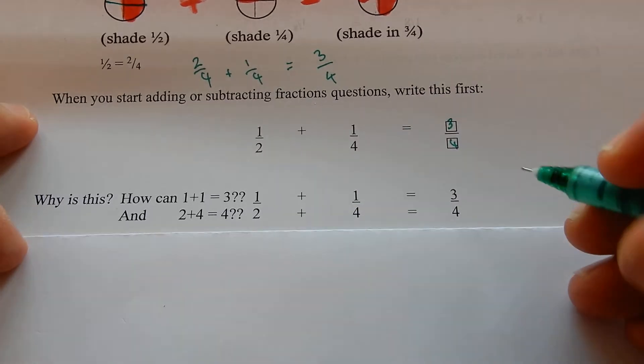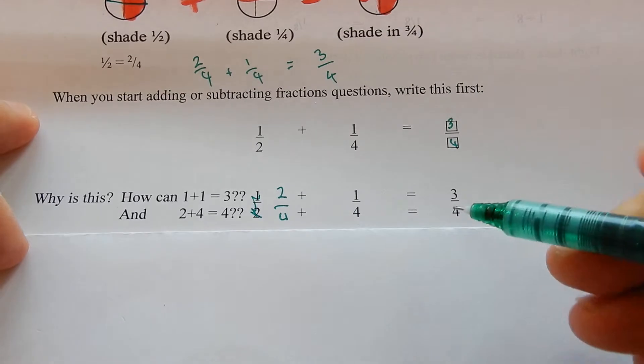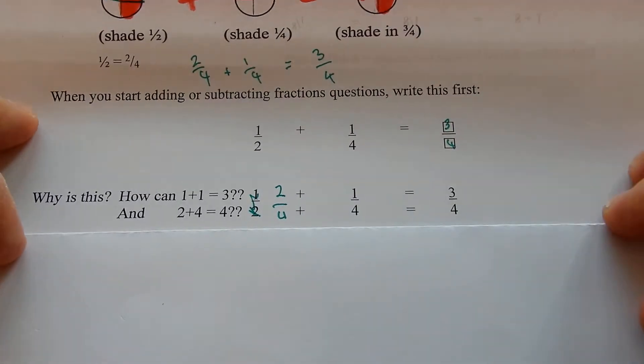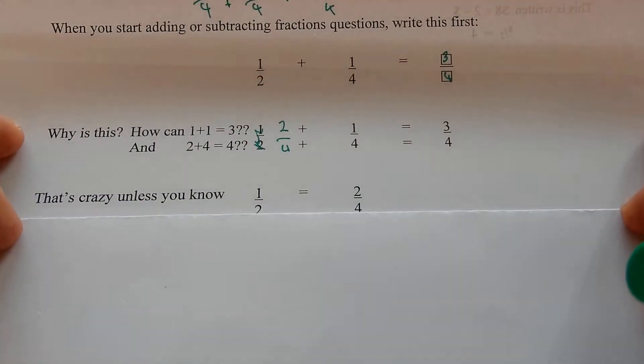The half has changed into quarters, two quarters. Now it makes sense. Two quarters plus one quarter is three quarters. Bottom, bottom, bottom. The three bottoms are the same.